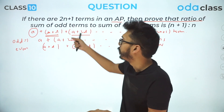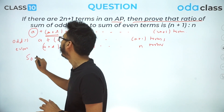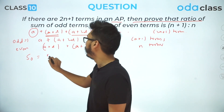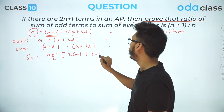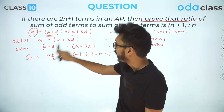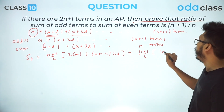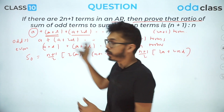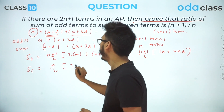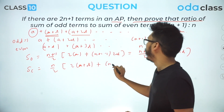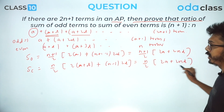Now we compute each sum. For the odd series (So): first term = a, common difference = 2d, number of terms = n+1. So So = (n+1)/2 × [2a + n×2d] = (n+1)/2 × (2a + 2nd). For the even series (Se): first term = a+d, common difference = 2d, number of terms = n. So Se = n/2 × [2(a+d) + (n−1)×2d] = n/2 × (2a + 2nd).